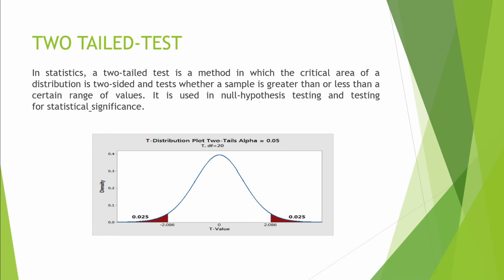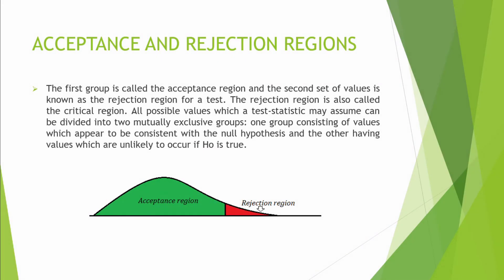A two-tail test is a statistical test in which the critical area of distribution is two-sided, and it tests whether the sample is greater than or less than a certain range of values. It is used in null hypothesis testing and testing of statistical significance. In a two-tail test, we have two critical areas — one on the left side and one on the right side.